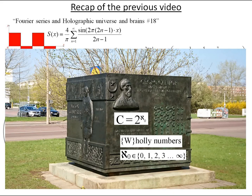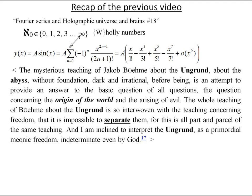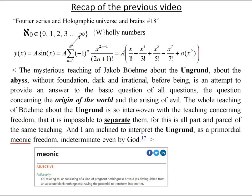In philosophical interpretation, the monolith of whole numbers can be the mysterious teaching of Jakob Böhme about the Ungrund, about the abyss, without foundation, dark and irrational, before being, as an attempt to provide an answer to the basic question of all questions, the question concerning the origin of the world and the arising of evil. The Ungrund means of relating to or consisting of a kind of pregnant nothingness or void, as distinguished from an absolute blank nothingness having the potential to transform into matter.